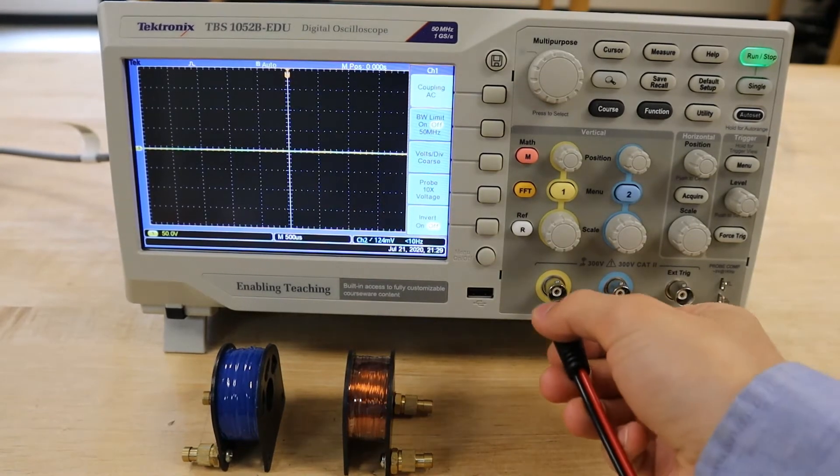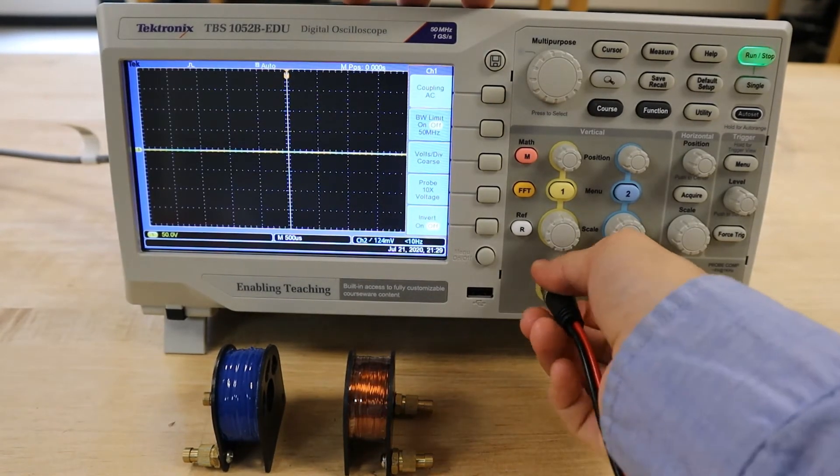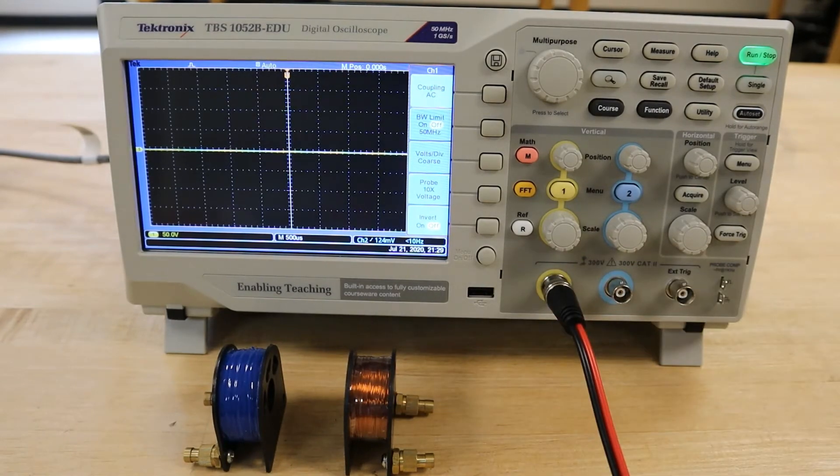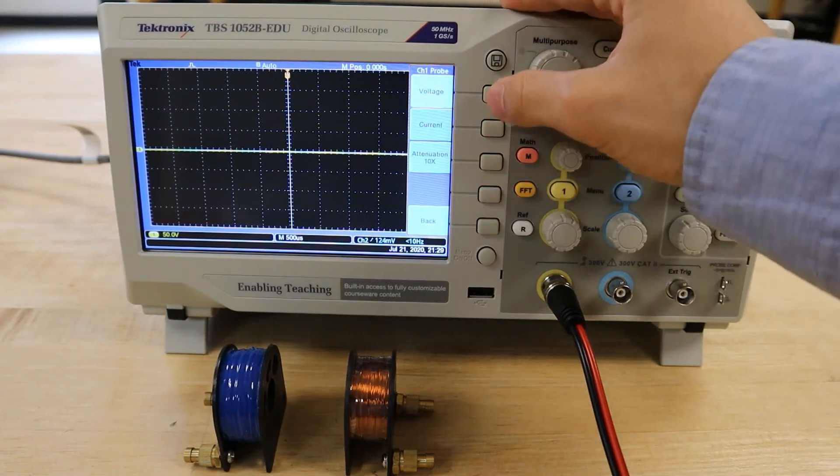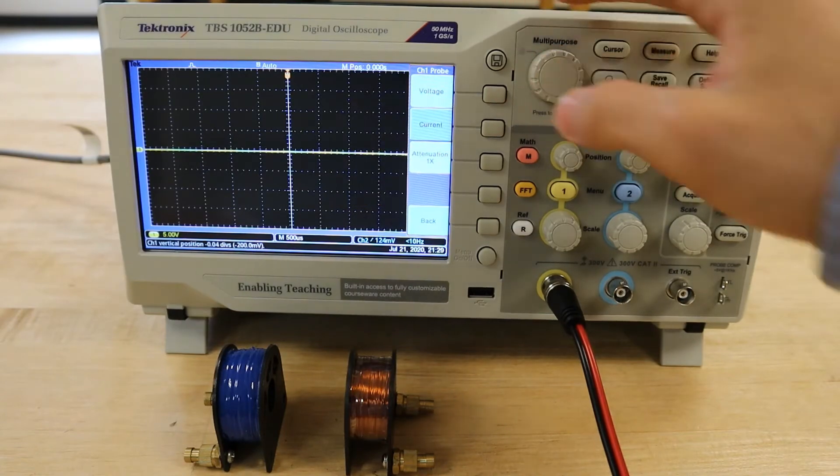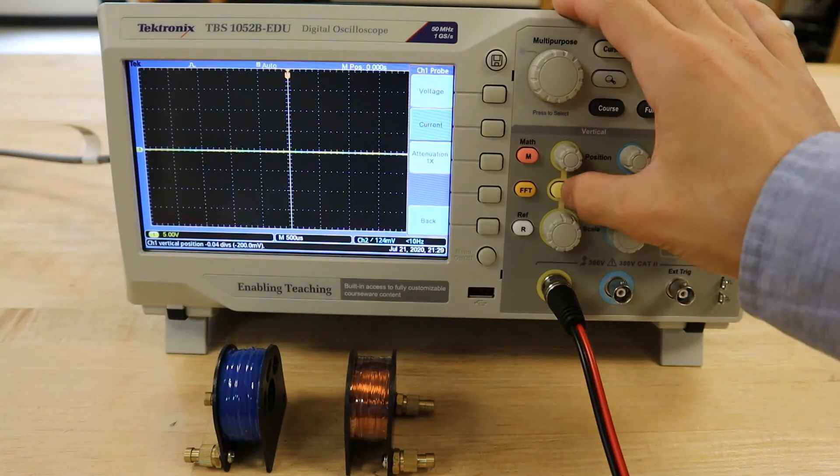Once the device has initiated, we will connect a BNC to banana cable to the first channel and check to make sure that the attenuation factor is set to 1x on the oscilloscope.